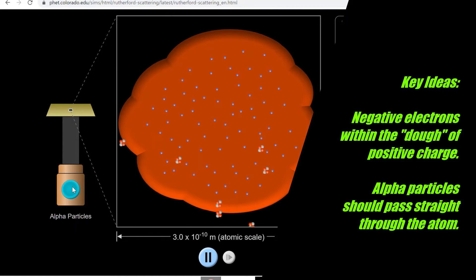This means that if I was to fire off some alpha particles then they should be going straight through. The reason for that is because there's going to be an equal amount of force pulling one way and an equal amount of force pulling the other way from the positive and negative charges.